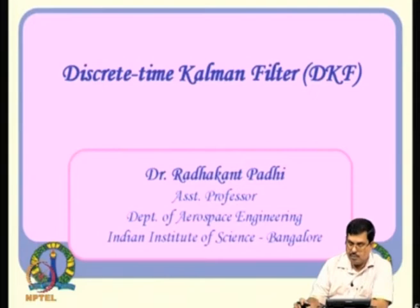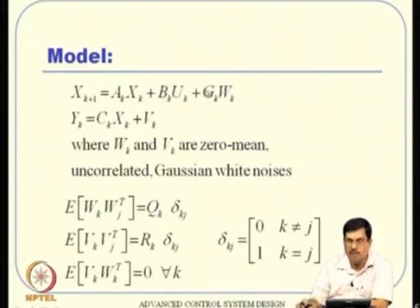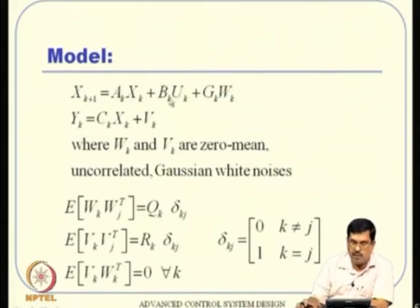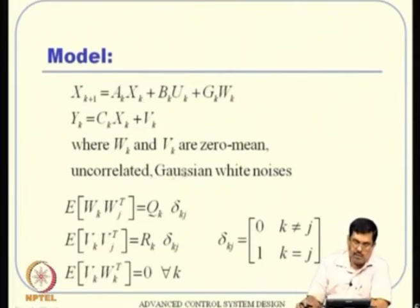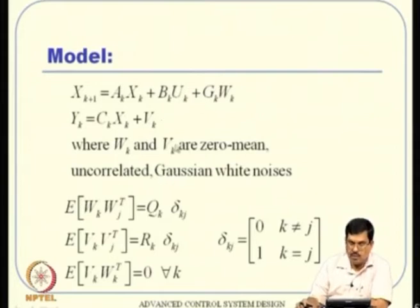For discrete-time Kalman filter theory, we assume a linear (possibly time-varying) discrete system: x_{k+1} = A_k*x_k + B_k*u_k + G_k*w_k, and measurement y_k = C_k*x_k + v_k, where A_k, B_k, C_k, G_k can be time-varying. The noise processes w_k and v_k are assumed to be zero-mean uncorrelated Gaussian white noises — the Gaussian assumption is realistic and gives nice theoretical properties, since the distribution is fully characterized by its mean and covariance.